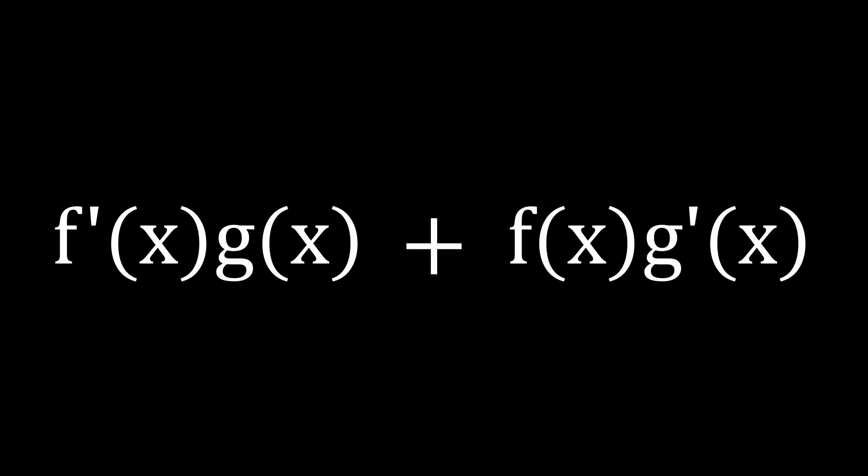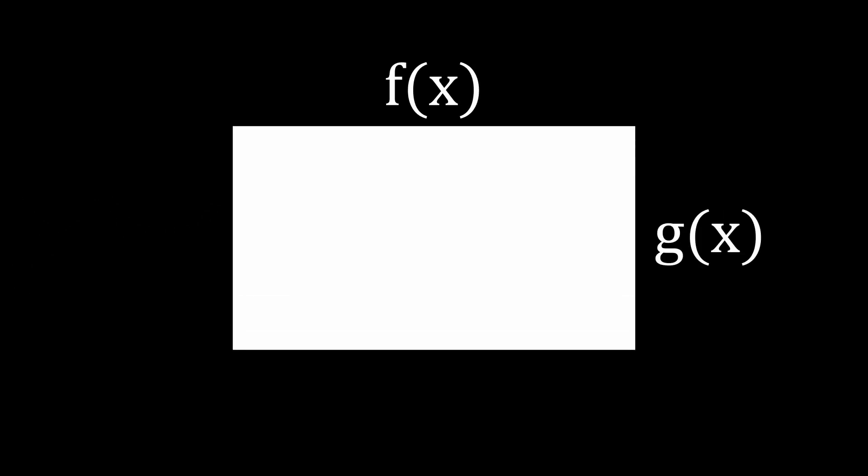Although I could just give you this rule, I believe that the much more elaborate option would be to explore the proof behind it. Let's take two sides of a rectangle with length f(x) and g(x), its area being their multiplication. If we shift x by a small change dx, then three new shapes are created.